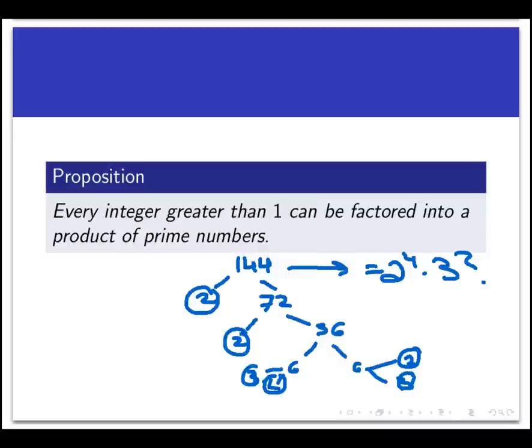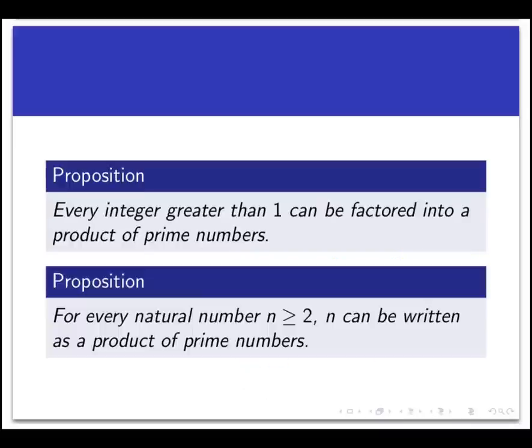In the extended principle of induction, which we learned about in an earlier video, we have a predicate that's claimed to be true for values of n that are greater than or equal to a certain threshold. So the first thing we need to do is identify the predicate.